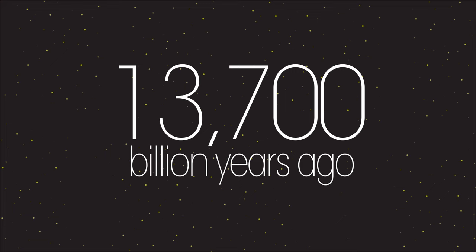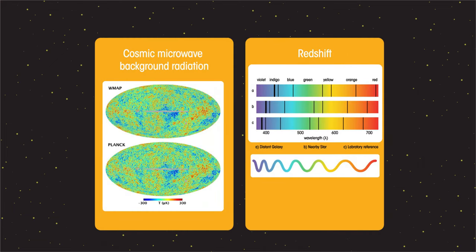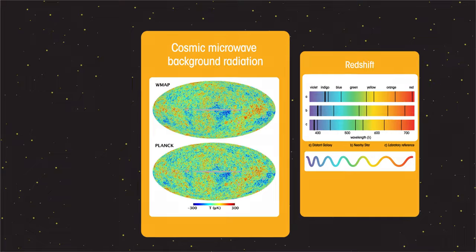There are two pieces of evidence for the Big Bang: Cosmic Microwave Background Radiation and Redshift.